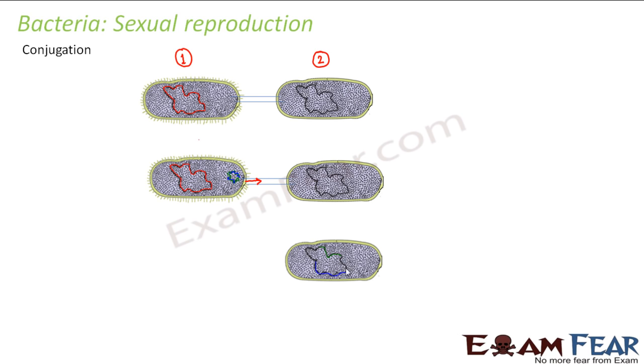It got mixed with the already existing chromosome of bacteria 2. The mixing of the two chromosomes took place. Now if you look at bacteria 2, its chromosome is altered.